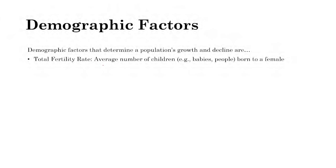The first one is total fertility rate. It's the average number of children born to a female — the average number of babies born to each female individual within the country, roughly between ages 15 to 45.